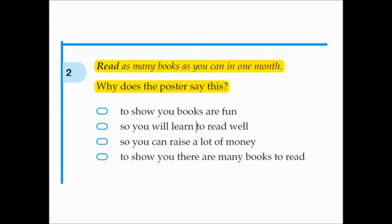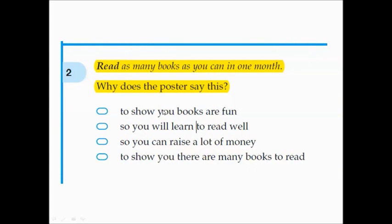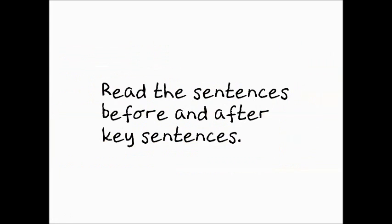Here's another one. 'Read as many books as you can in one month' — why does the poster say this? Again, treat this as an experiment. The options are: to show books are fun, so you'll learn to read well, so you can raise lots of money, or to show there are many books to read. The only answer that makes sense comes from looking at the sentences before and after. Before it says find sponsors, ask family and friends to give you money for every book you read. After it says collect the money from your sponsors. So it's obvious the reason you're reading books is to collect that money. It's not about fun, not about your reading skills — it's about raising money.